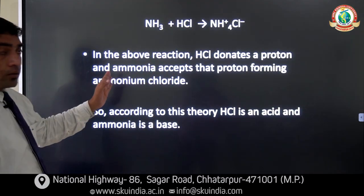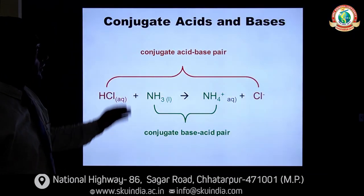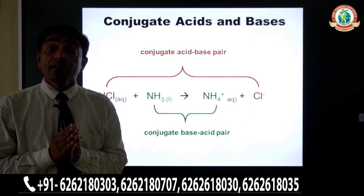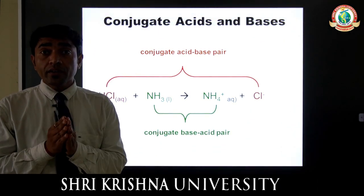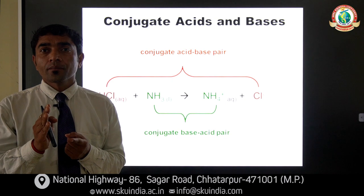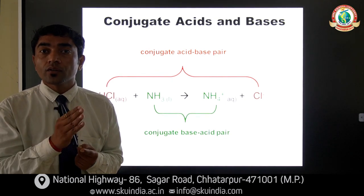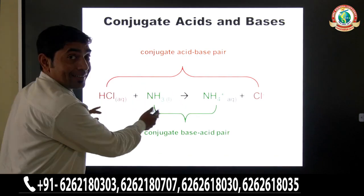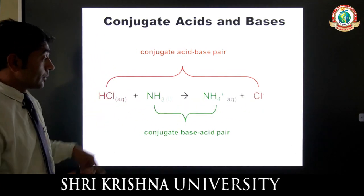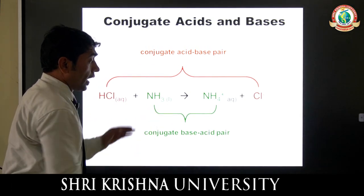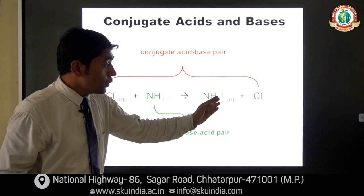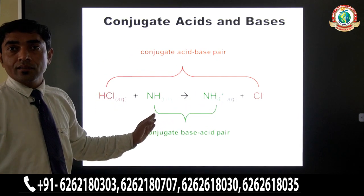In the above reaction, HCl donates a proton. Now, what are conjugate acids and bases? When HCl dissociates into H⁺ and Cl⁻, the Cl⁻ — the chemical entity without the proton — is known as the conjugate base of HCl. Similarly, when ammonia (a base) accepts a proton, it becomes NH4⁺. So NH4⁺ is the conjugate acid of ammonia.